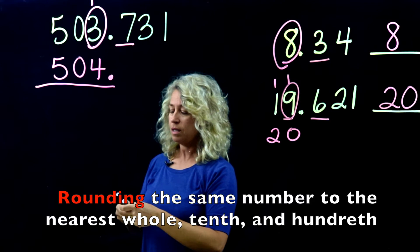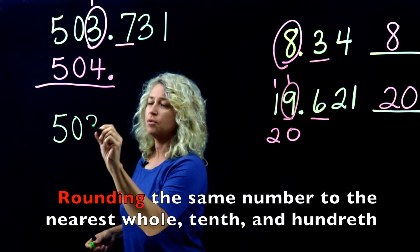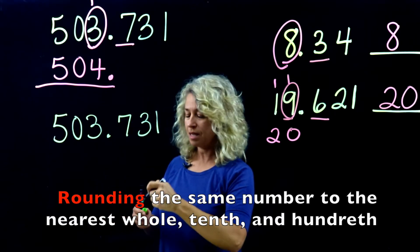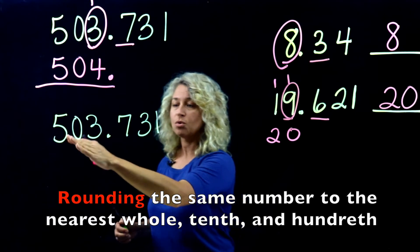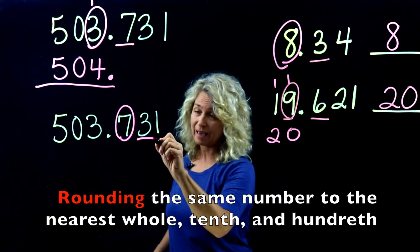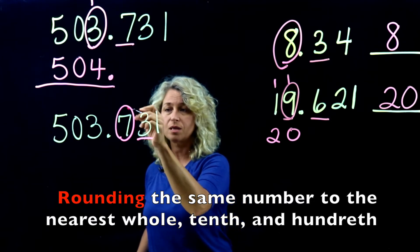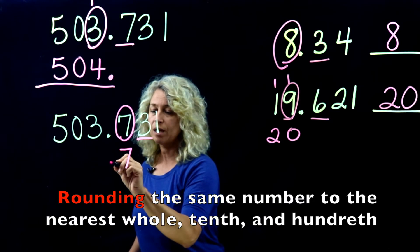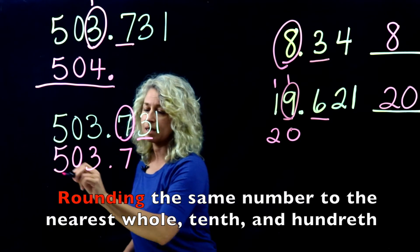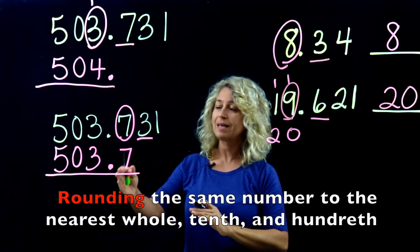Now what if we rounded the same number to the nearest tenth? Circle the tenths place and underline the digit to the right. The digit is 3, which is 0 to 4, so the number stays the same — bring the 7 down, and the other digits remain the same. Rounded to the nearest tenth, 503 and 731 thousandths is 503 and 7 tenths.